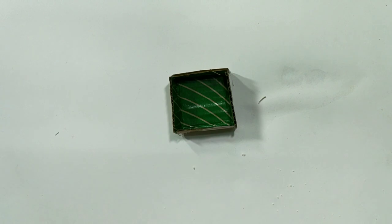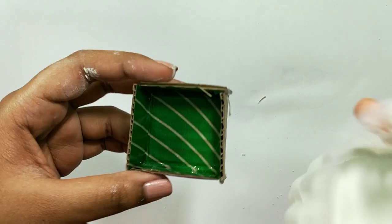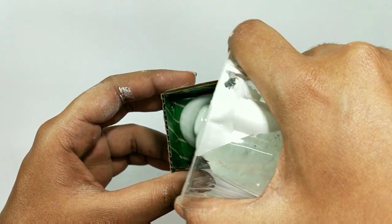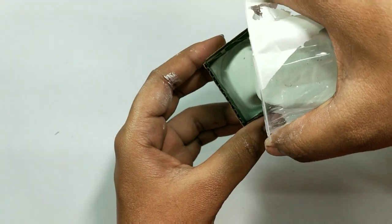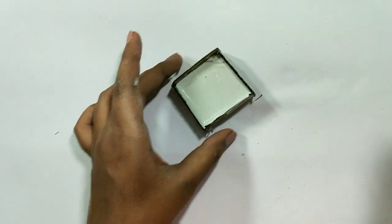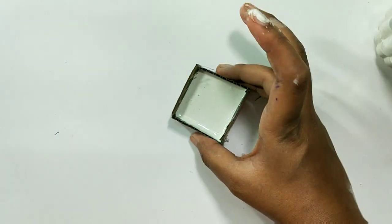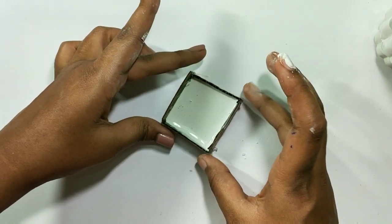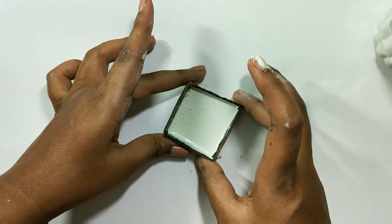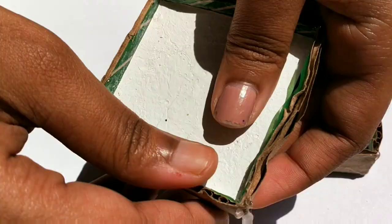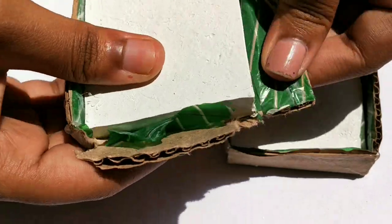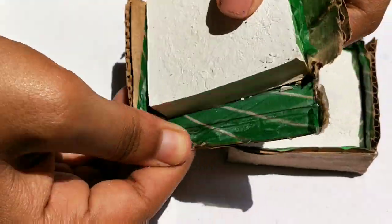Now, pour the mixture into the mold and tap it twice or thrice to make sure that there is no air bubble in it. Let it dry for at least 24 hours and then you can remove it from its mold.